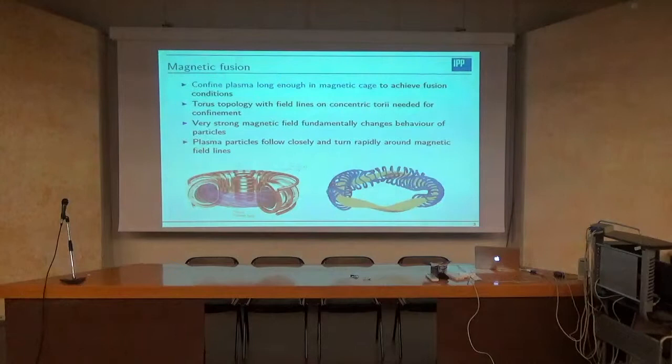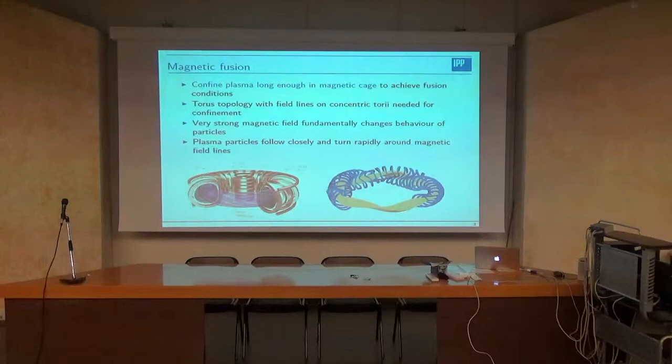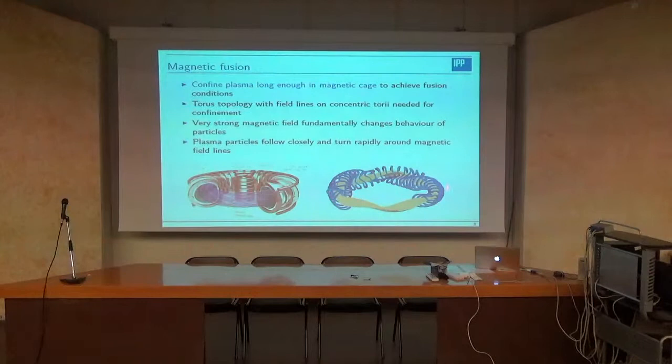There is another one which just started experimenting last week — the first plasma was last Thursday, just one week ago. This is a Stellarator concept, and this is in the second half of our institute, in the north of Germany — northeast, close to the Baltic Sea and to the Polish border. So about as far as possible as you can be from Munich. This device is quite interesting.